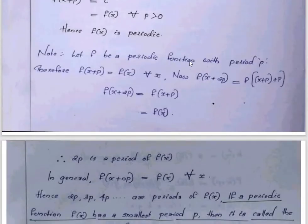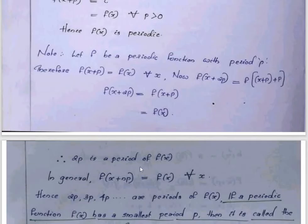Let f be a periodic function with period p. Therefore f of x plus p equals f of x for all x. Now, f of x plus 2p equals f of x plus p plus p, which equals f of x. That is, 2p is also a period. We can generalize: a function with period p also has periods np — that is, 2p, 3p, 4p, etc.